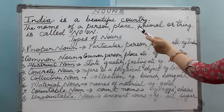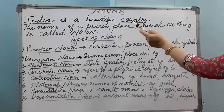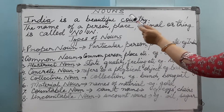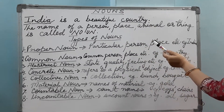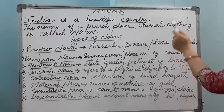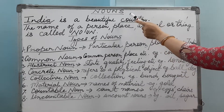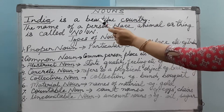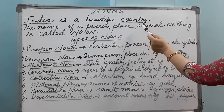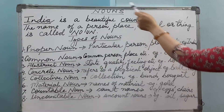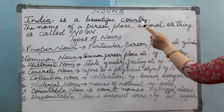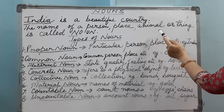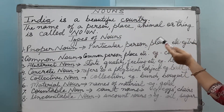Hello everyone. In my last video I discussed parts of speech, and I told you we are going to do all the parts of speech in detail in the coming videos. So today we are doing nouns. Let's begin with the help of an example: India is a beautiful country. Here in this sentence, India and country are the names. So the name of a person, place, animal, or thing is called a noun.